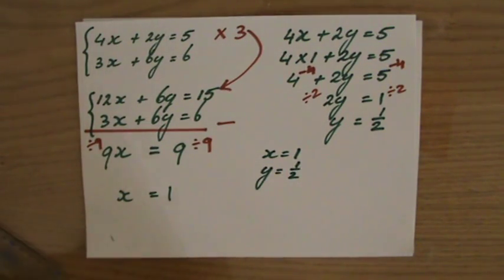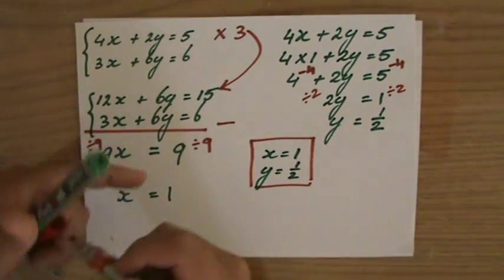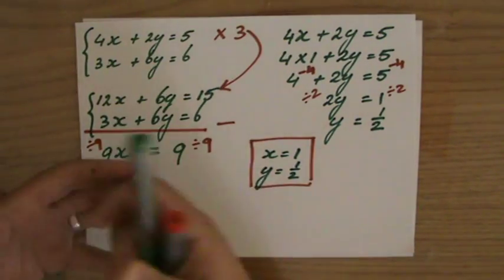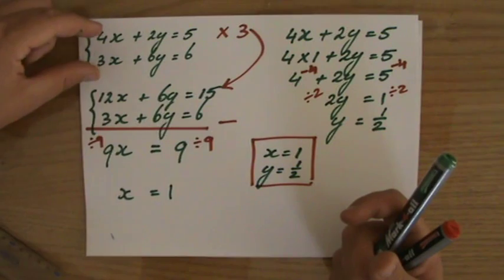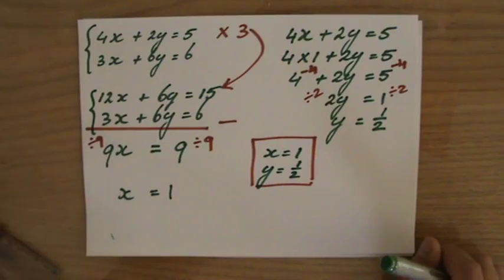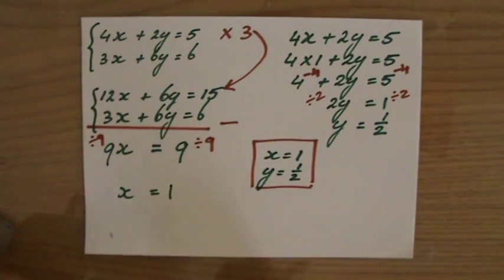So before I could work it out, before I could start applying the elimination method, I had to manipulate one of the equations. Now I can imagine that in a different situation you perhaps have to multiply both equations by a particular factor. That's something for you to work out. Or perhaps leave me a question and I will show you. All right.